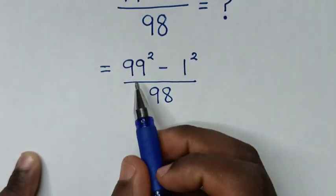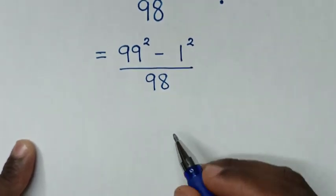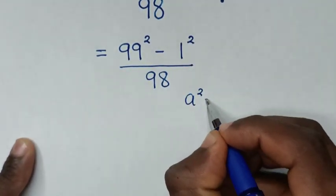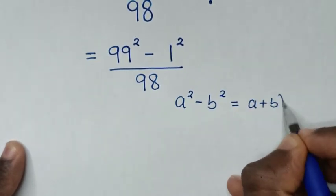99 squared minus 1 squared is in the form of a difference of squares, so we'll apply the rule: a squared minus b squared is equal to (a + b) times (a - b).